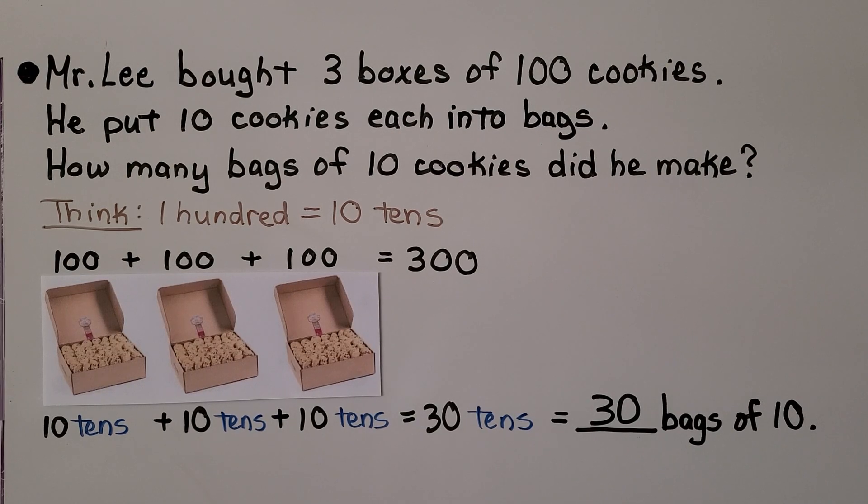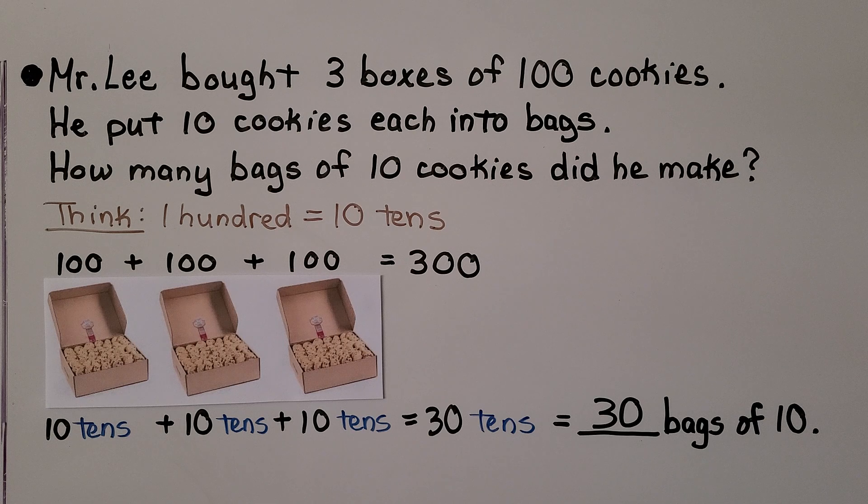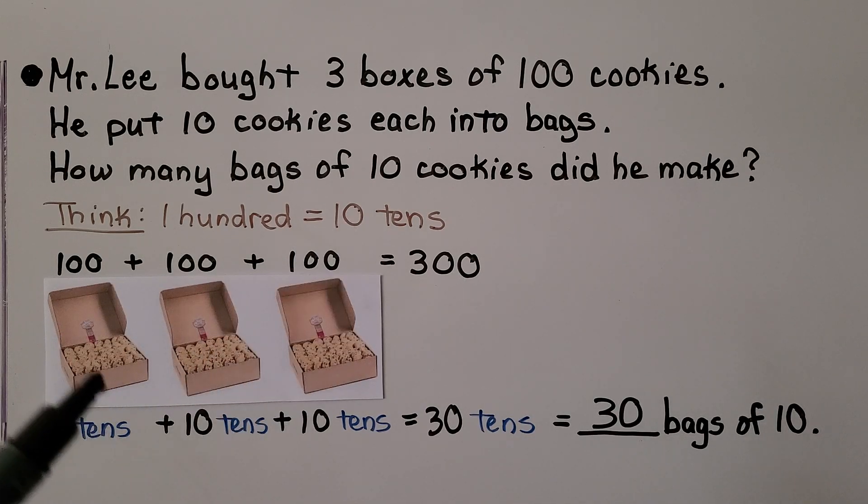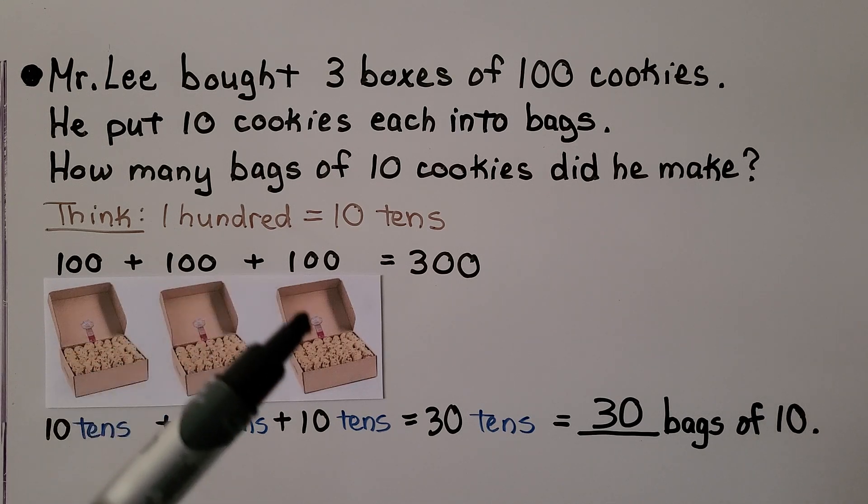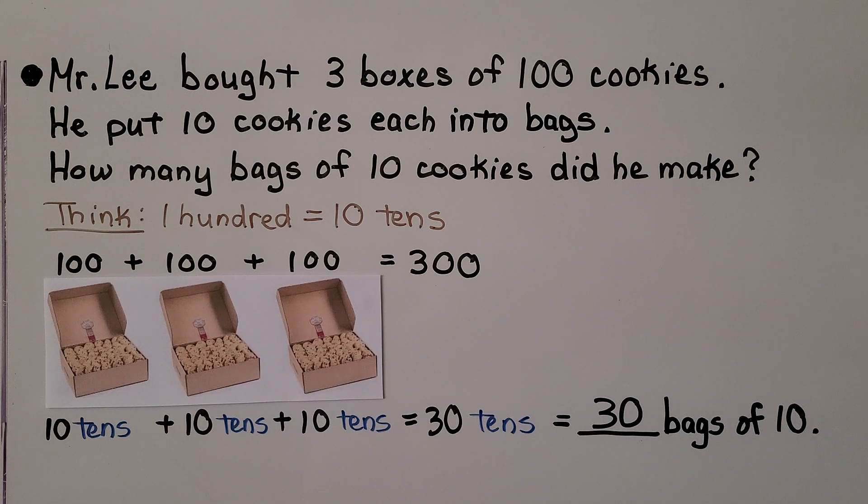Mr. Lee bought three boxes of one hundred cookies. He put ten cookies each into bags. How many bags of ten cookies did he make? So we think, one hundred is equal to ten tens. He has one hundred cookies, plus one hundred cookies, plus one hundred cookies. That's three boxes of one hundred. That's three hundred cookies. And one hundred is ten tens. We have ten tens, plus ten tens, plus ten tens. That's thirty tens. That means he was able to make thirty bags of ten.